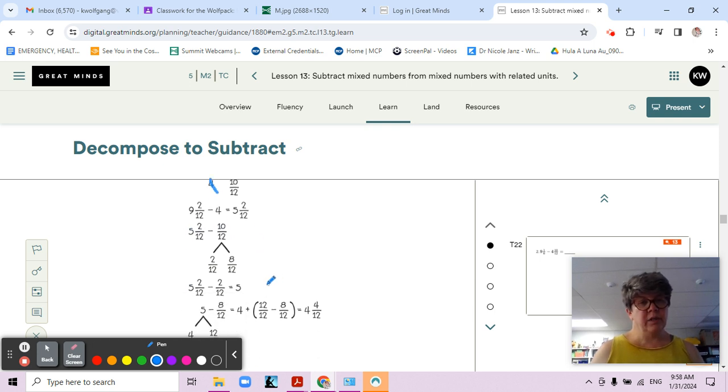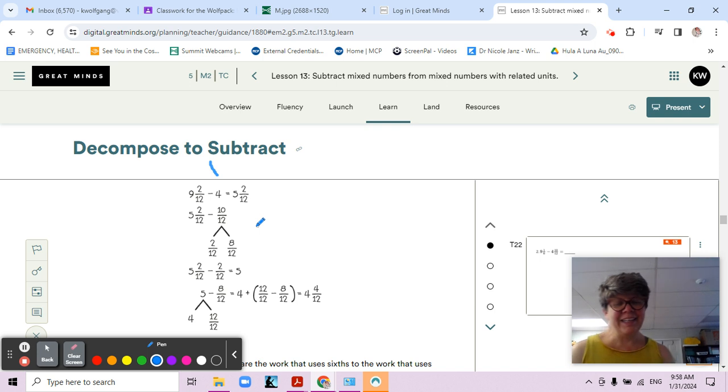Then we have five and two twelfths minus ten twelfths. Once again, two minus ten, that's a challenge. But let's break it into two twelfths and eight twelfths because two plus eight is ten, so I'm breaking it into two parts. Now I'm taking away the two and that's leaving me with five. Then I'm taking my five, thinking of it as four and twelve twelfths.